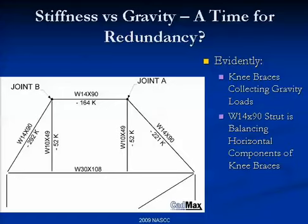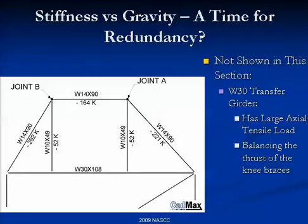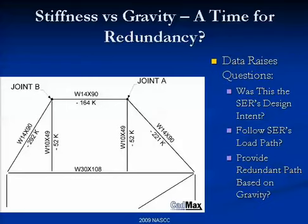The strut across the top is balancing the diagonal compression loads, and there's a large tension load in the W30 member not shown here. The final analysis: you've got lots of members with big forces that you wouldn't otherwise have. This does raise the question: is this the engineer of record's design intent? Should we follow the engineer's load path, or should we provide a redundant load path — which is a nice thing to have in a 439-foot truss anyway?